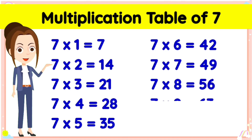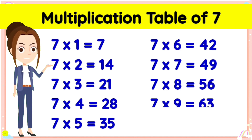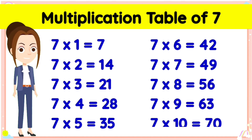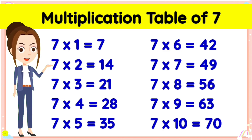Seven eights are fifty-six. Seven nines are sixty-three. And seven tens are seventy.